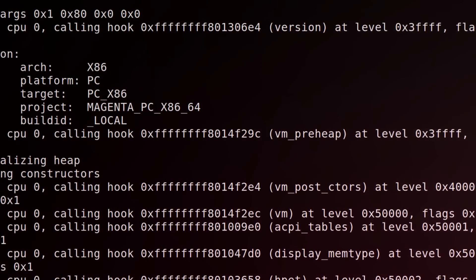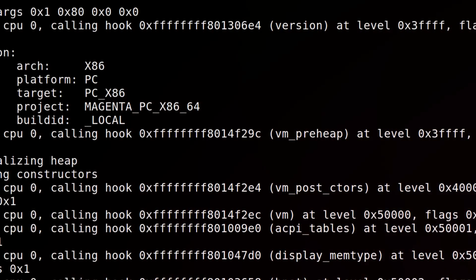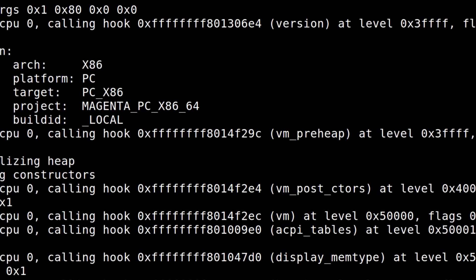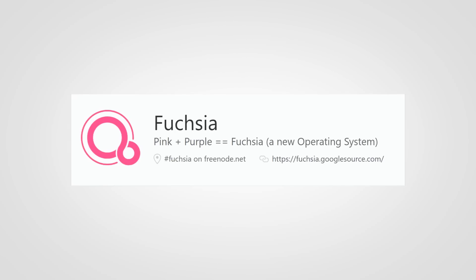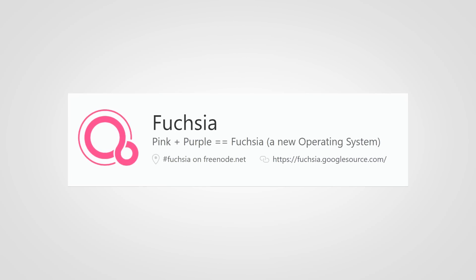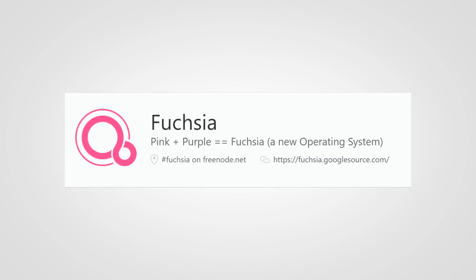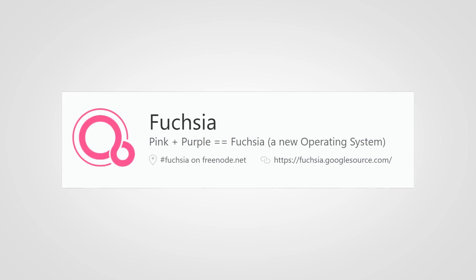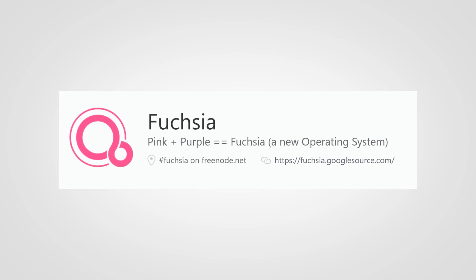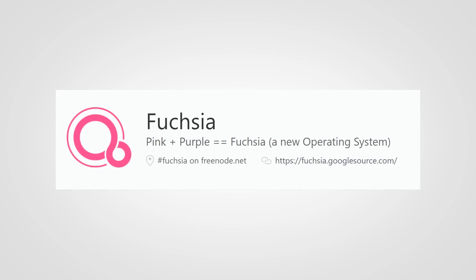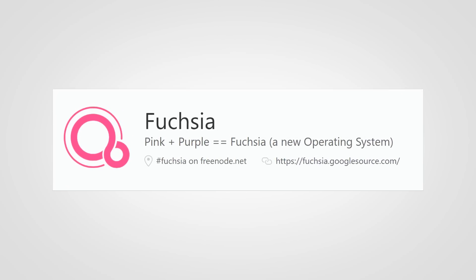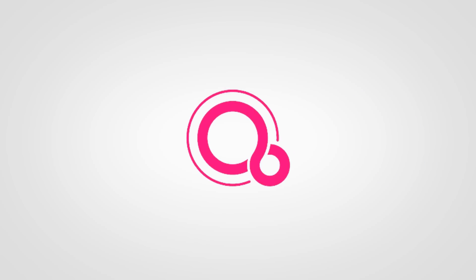But then, without any public announcement, this rather mysterious code was posted on GitHub, which suggested that Google was actually working on a whole new operating system called Fuchsia. As of this moment, the info on this OS is relatively sparse, but there's still enough to spark interest in the world of technology.